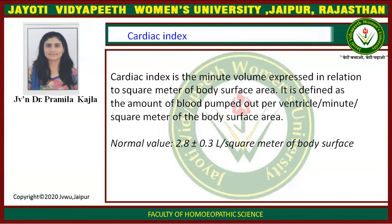Now I will tell you about cardiac index. It is the minute volume expressed in relation to square meter of body surface area. It is defined as the amount of blood pumped out per ventricle per minute per square meter of body surface area. The normal value of cardiac index is 2.8 per square meter of body surface.